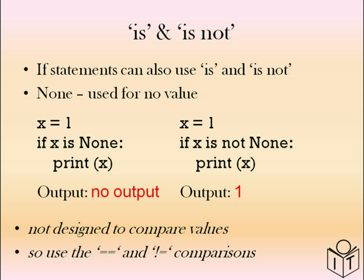We normally use symbols like equals-equals and not-equal, greater than or smaller than. But in Python, you can use the word is, and this can also be used with is not. In this example, we use the keyword none — sometimes you don't want to use zero because you might have smaller or larger numbers, so you use none which has no value. If x is none, print x has no output. In the second example, is not none prints x because it has a value which is not none.